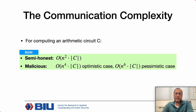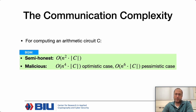What is the communication complexity of the protocol? For computing a function f, we first represent it as an arithmetic circuit C. The communication complexity of the protocol is n-squared times the size of the circuit in the semi-honest setting.